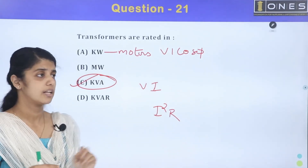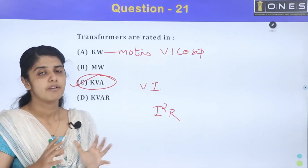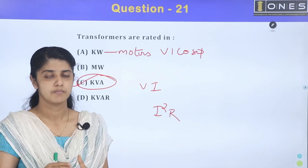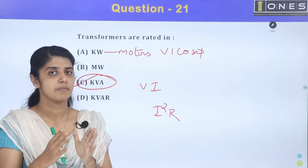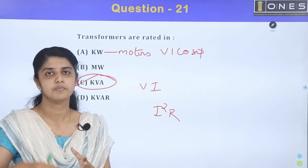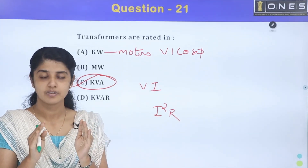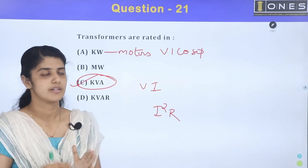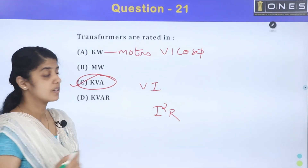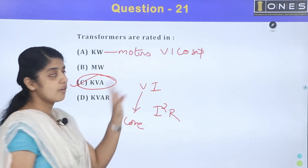Core loss is a constant loss. If we apply the supply voltage at the rated voltage, it will produce rated flux. With rated voltage applied, the core loss remains constant, as it depends on voltage.